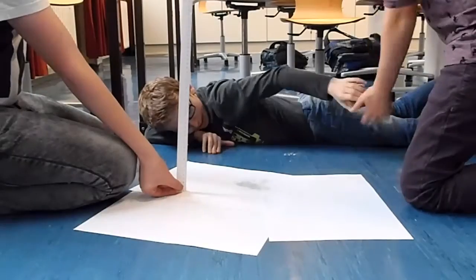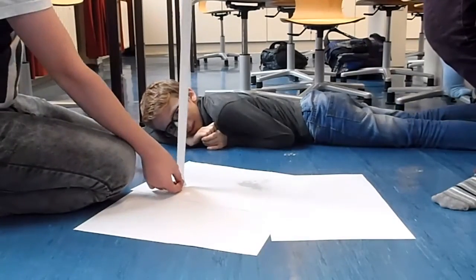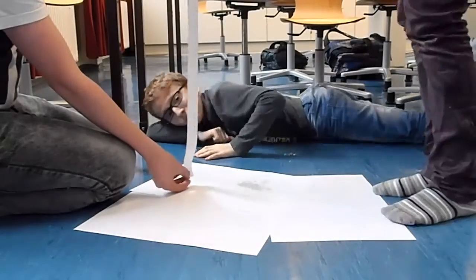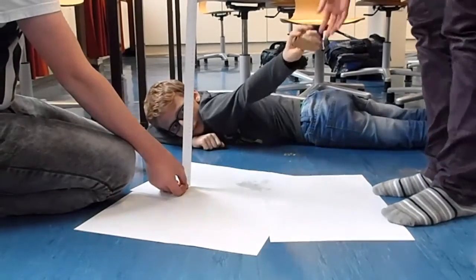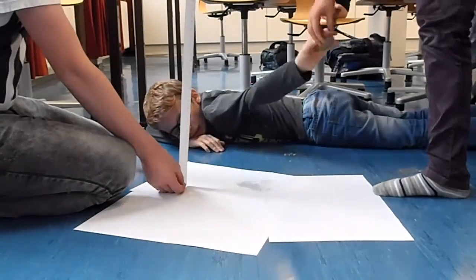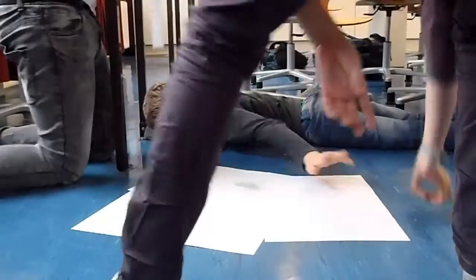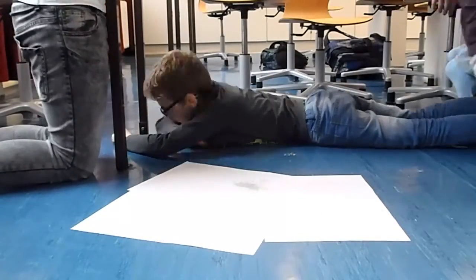Nach einer langen Versuchsreihe kamen wir zum Schluss, dass unsere Überlegung falsch sei, da das Brot meistens auf die Kante oder auf die Butterseite gefallen ist. Warum war das so? Die Erdbeschleunigung macht uns da leider einen Strich durch die Rechnung. Das Butterbrot wurde dadurch immer schneller und braucht so für eine Umdrehung mehr Strecke.